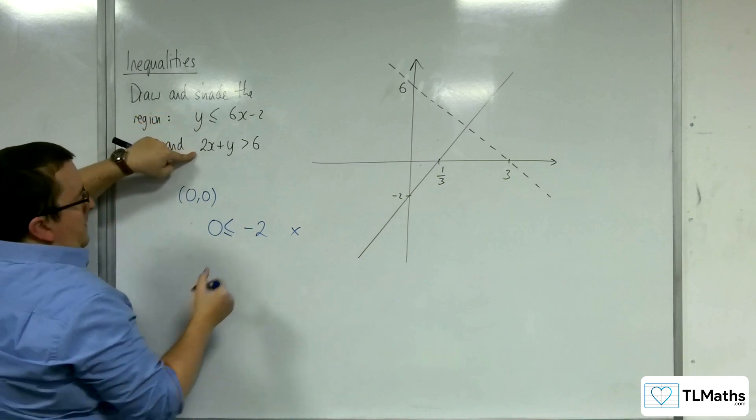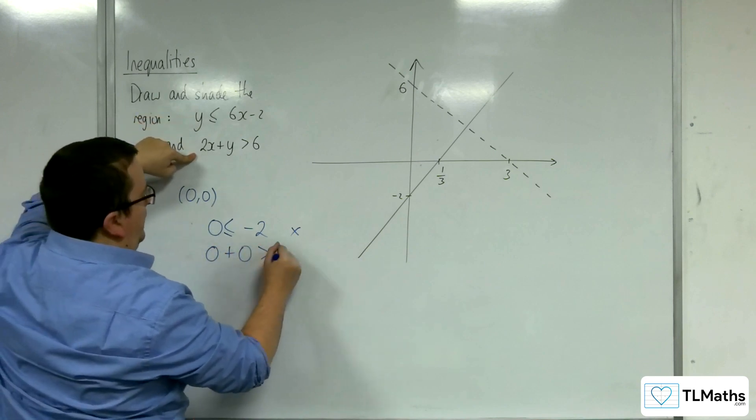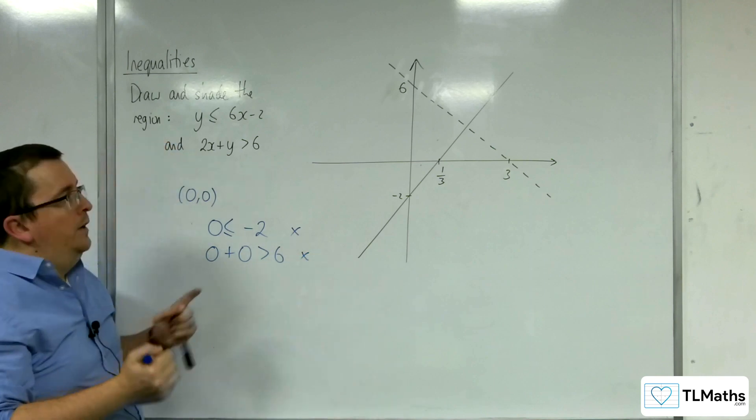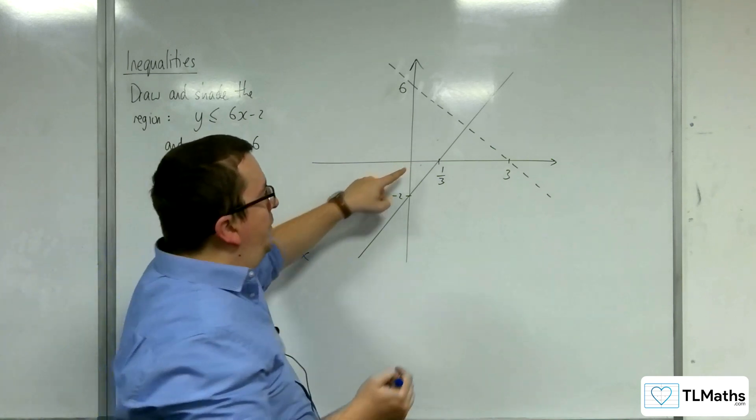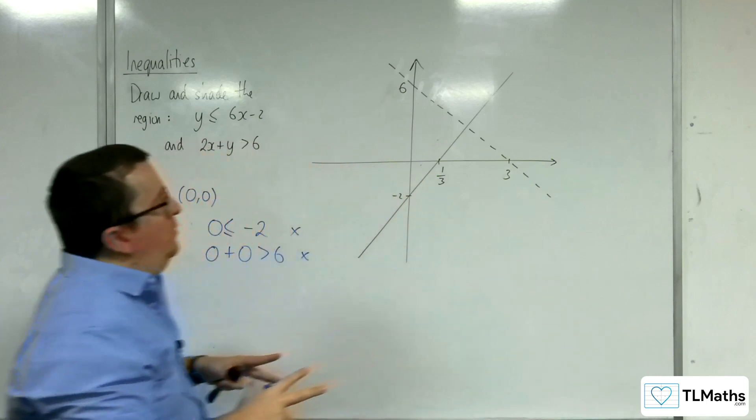Let's check it on this one. So is 0 + 0 greater than 6? No. So (0, 0) is not in the region for either of the two lines.